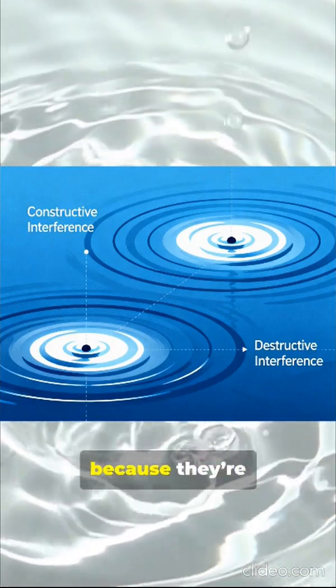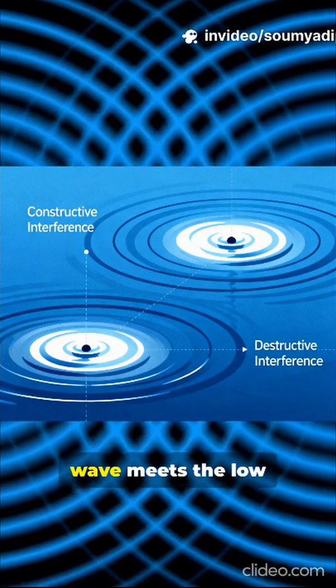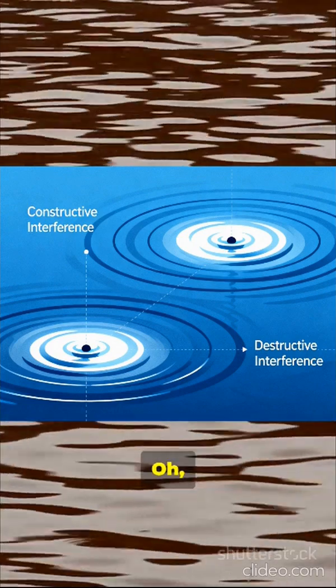Exactly. But if a crest meets a trough—the high point of one wave meets the low point of another—the waves cancel or reduce each other. That's destructive interference.